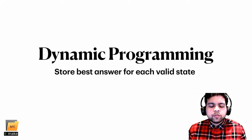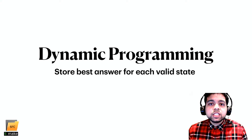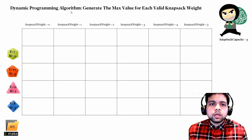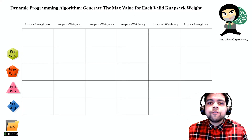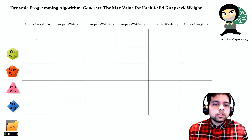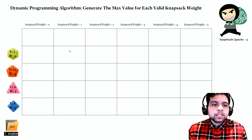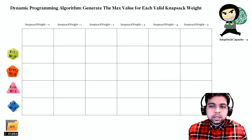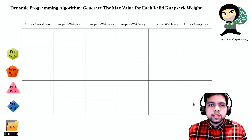Dynamic programming means storing the best answer for each valid state. For the 0-1 knapsack, we generate the maximum value for each valid knapsack weight using a 2D array. Each cell represents a certain knapsack weight and a certain item visited — it answers: what's the maximum value I can get considering this item and all previous items, with at most this knapsack weight? The final answer is the bottom-right cell: all items considered, maximum capacity used. The first row is all zeros because with no items, the knapsack is empty.